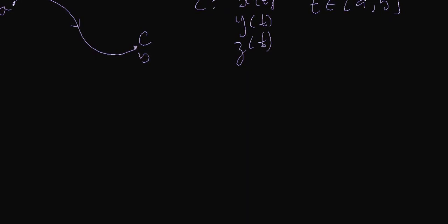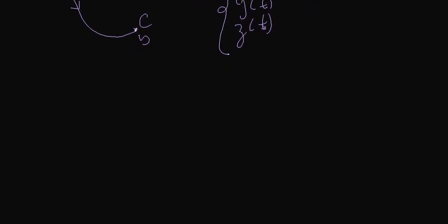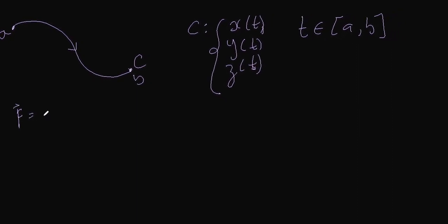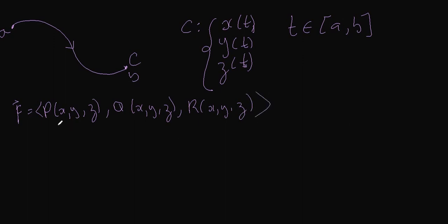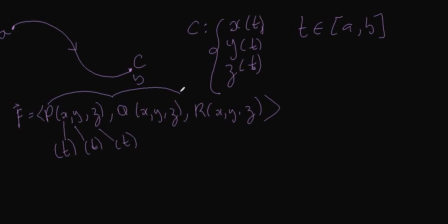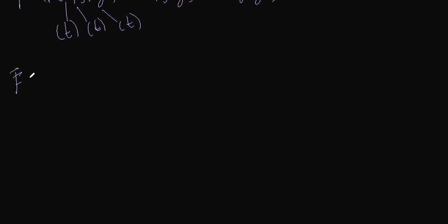Each component of the curve — x — is a function of t. So being the case, we also rewrite F, which is a function of P(x, y, z), Q(x, y, z), and R(x, y, z) — this is a vector — by rewriting x in terms of t, y in terms of t, and z in terms of t for P, Q, and R. That means the vector field F is now a function of t.